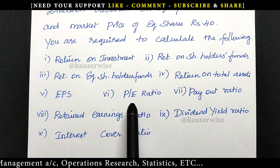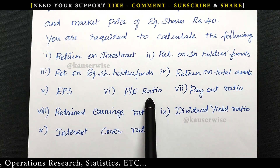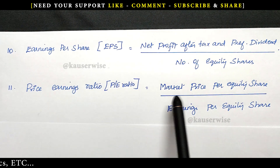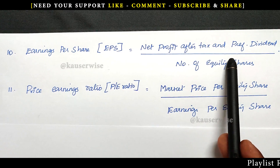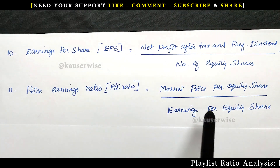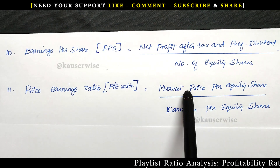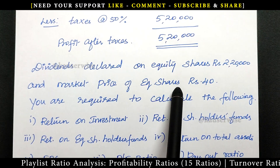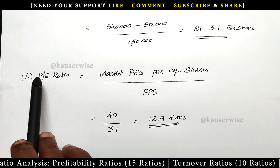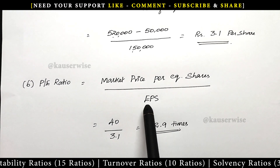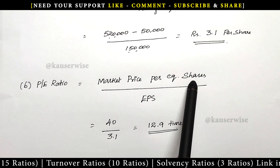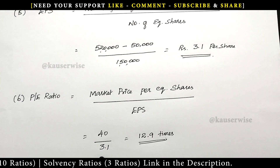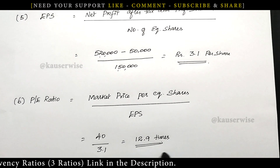Now see the next one: PE ratio — PE stands for Price Earning Ratio. The formula for price earning ratio is market price per equity share divided by earning per equity share. We have already calculated EPS so we can apply it here with the market price per equity share, which is given in the problem as rupees 40. Price earning ratio equals 40 divided by 3.1, giving 12.9 times. This is the price earning ratio.